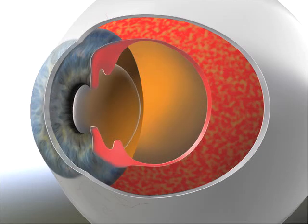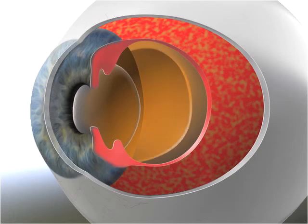Inside this lies the uvea, comprising the choroid, ciliary body and iris. The innermost layer, the vital one which translates light into nerve impulses for the brain, is the retina.